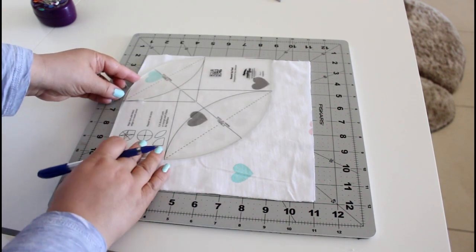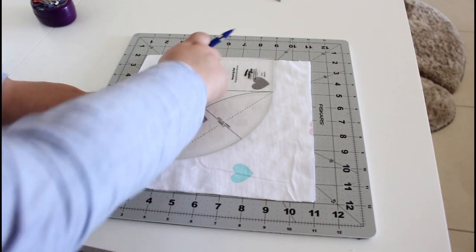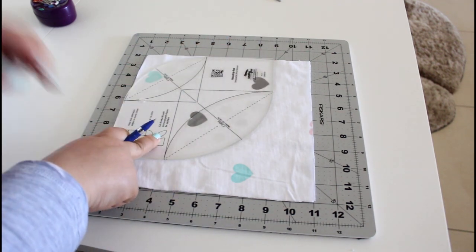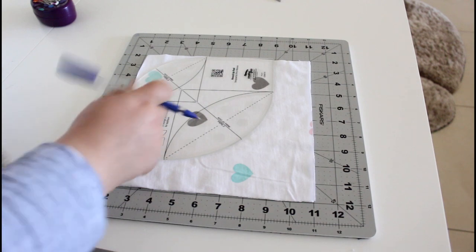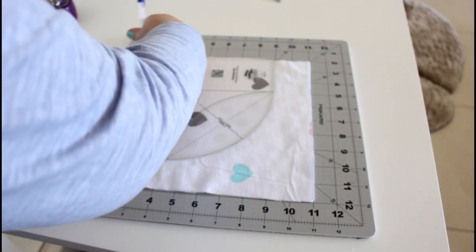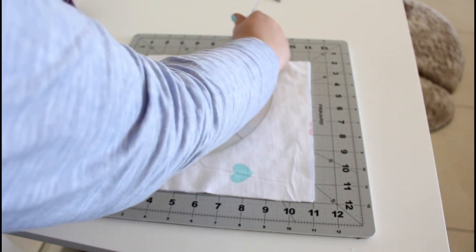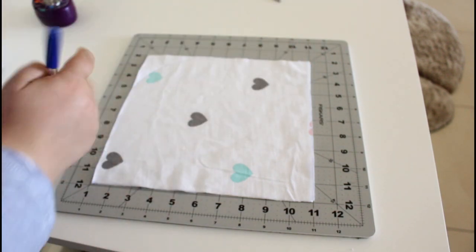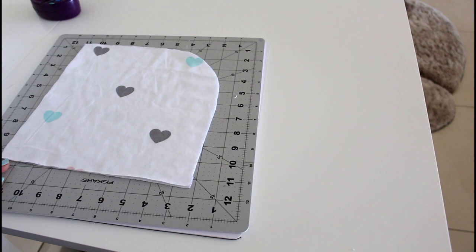And there we go. We just align the straight edges if you are using the ruler and draw the line. Now cut this way, this way.